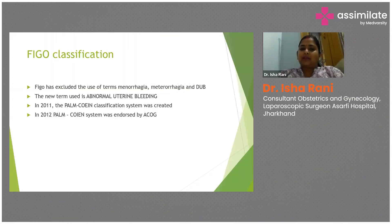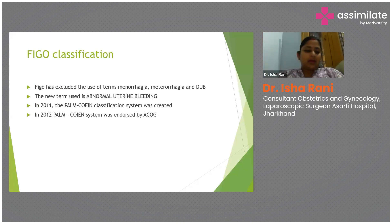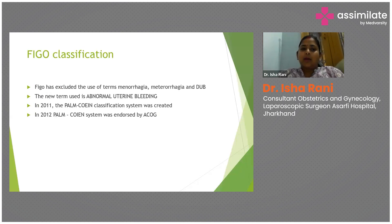After investigating, we have to assign a cause for why the bleeding is happening. Previously, terms like DUB, Menorrhagia, and Metrorrhagia were extensively used, but in 2011, FIGO came up with a classification system called PALM-COEIN.